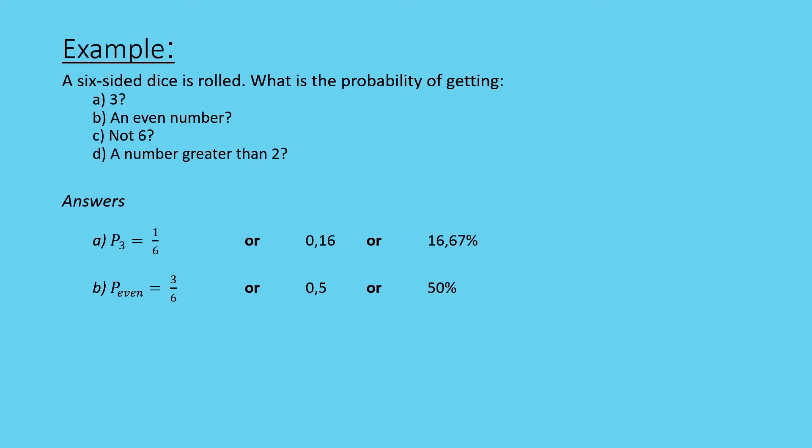Not a six. We have five numbers that are not six on the dice. So we're going to get 0.83 or 83.33% chance. And finally, a number greater than two.